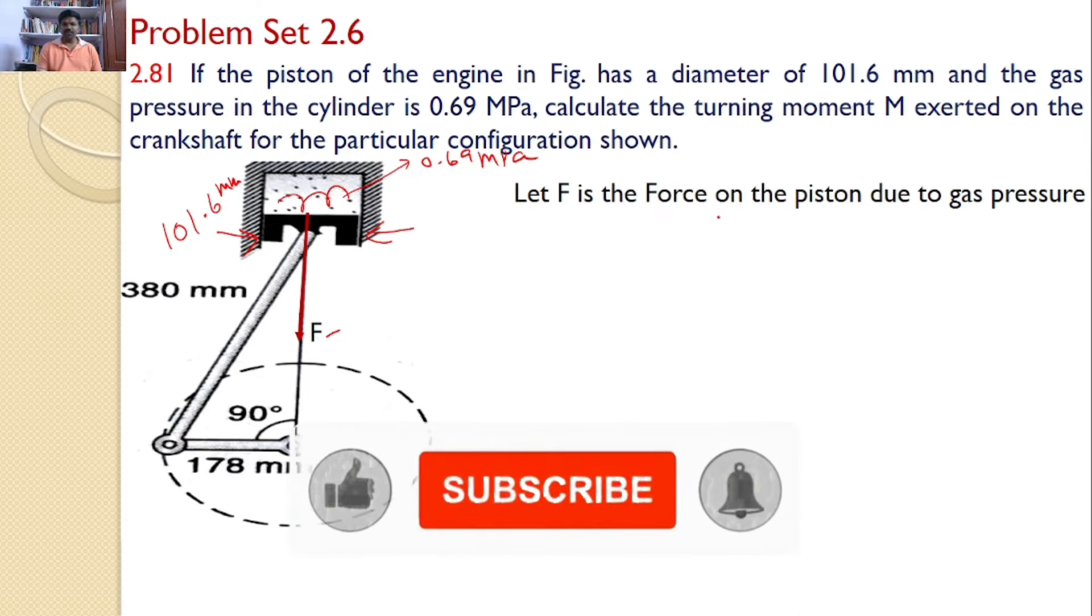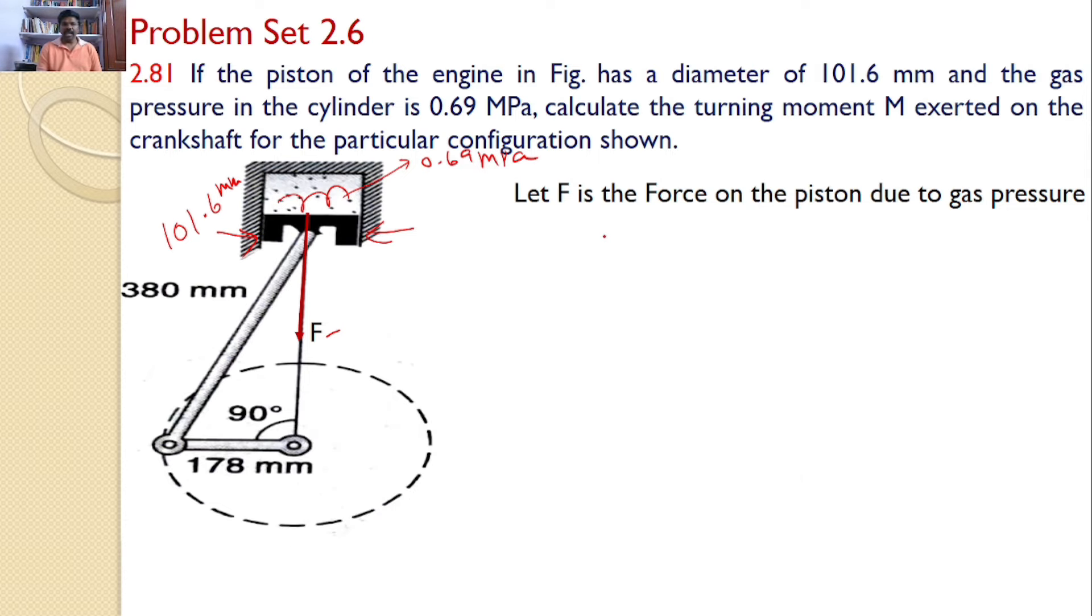Let F is the force on the piston due to the gas pressure. F will be calculated as pressure into area. The area is pi by 4 into d square, the diameter of the piston, that is 101.6. Hence, it is pi by 4 into 101.6 square into the pressure 0.69, which gives the value of 5594.05 newtons.